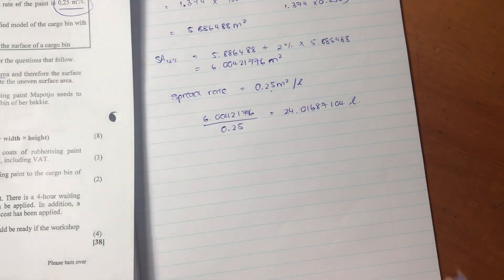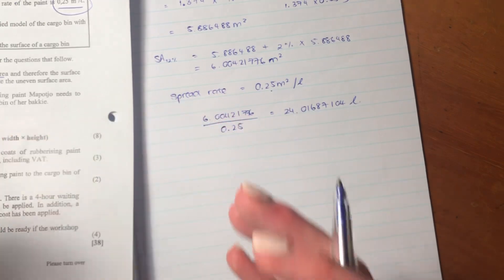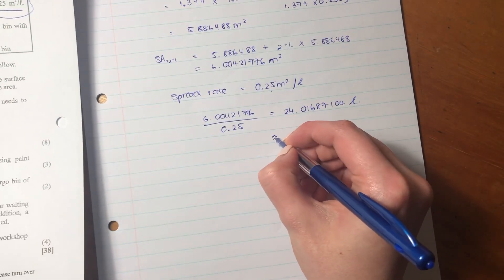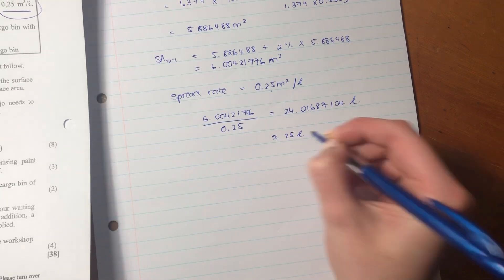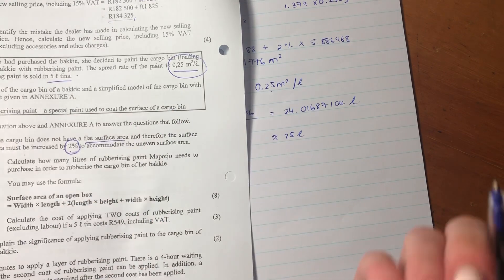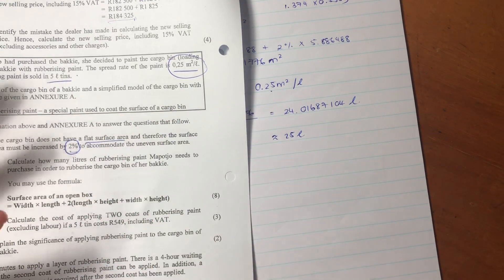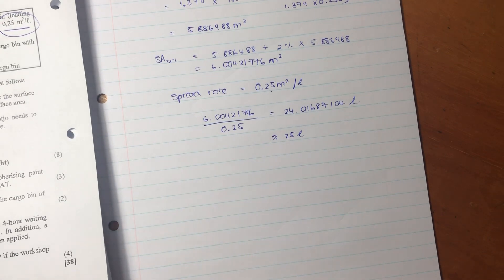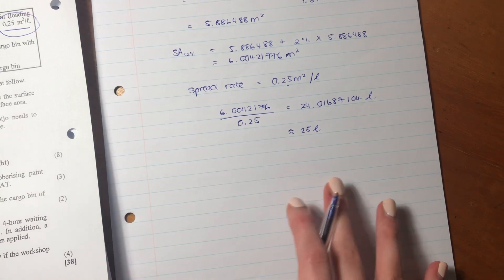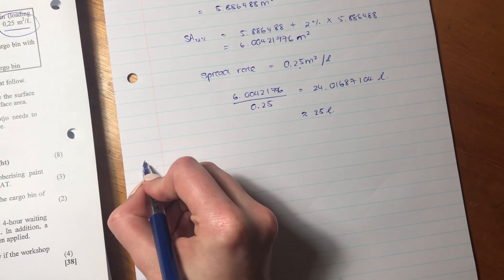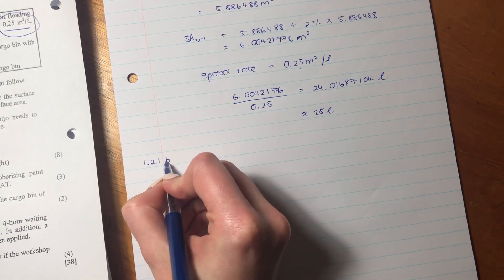So we're probably going to need, because remember, we can only buy in these five liter tins. So we're going to have to buy 25 liters. Because if it's doing it in five, it means I can either buy 20 or I can buy 25, but I can't buy 24. So I'm going to buy 25, so that I have enough, but there's going to be a little bit left over. So that is how much paint she'll need to paint this Bucky.